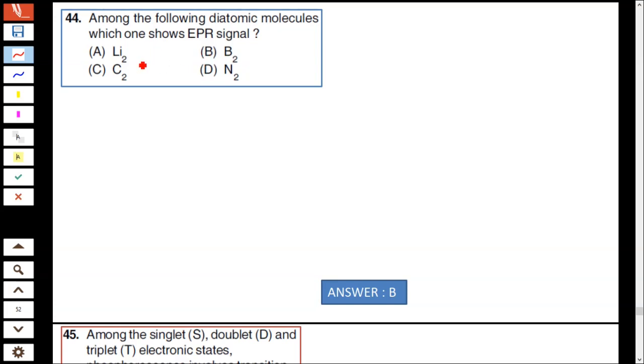Among the following diatomic molecules, which one shows EPR signal? Lithium will not show EPR signal. Carbon does not show EPR signal because it does not contain an unpaired electron. Nitrogen has a triple bond, does not show EPR signal, whereas boron contains two unpaired electrons, it shows EPR signal.